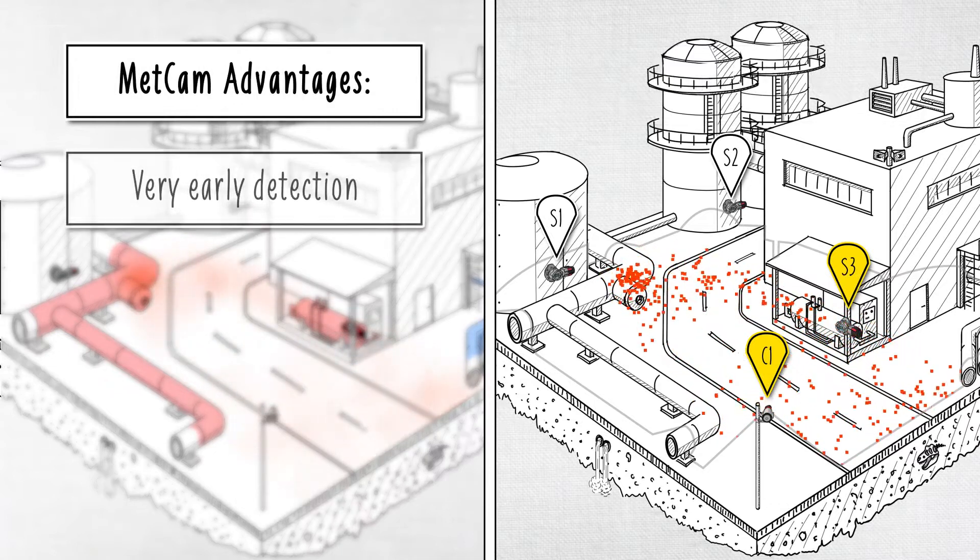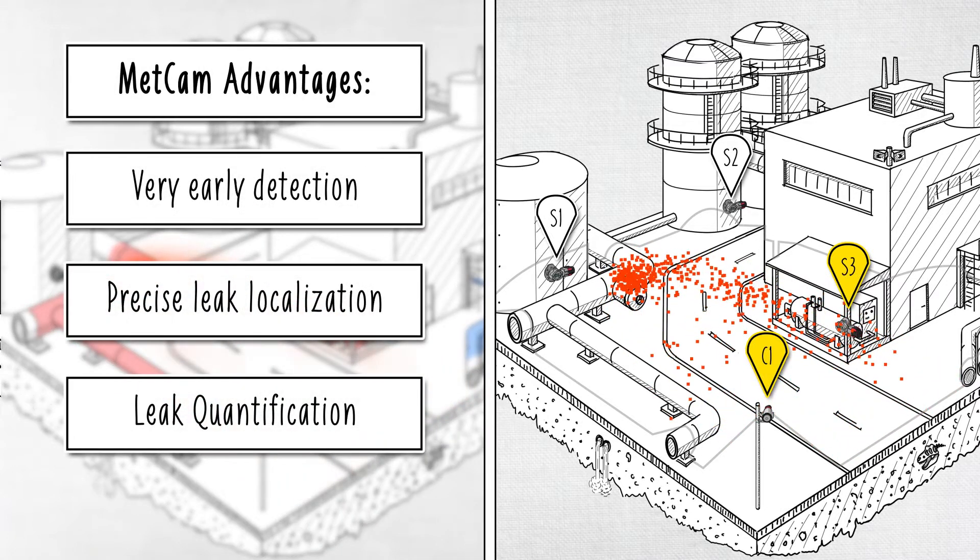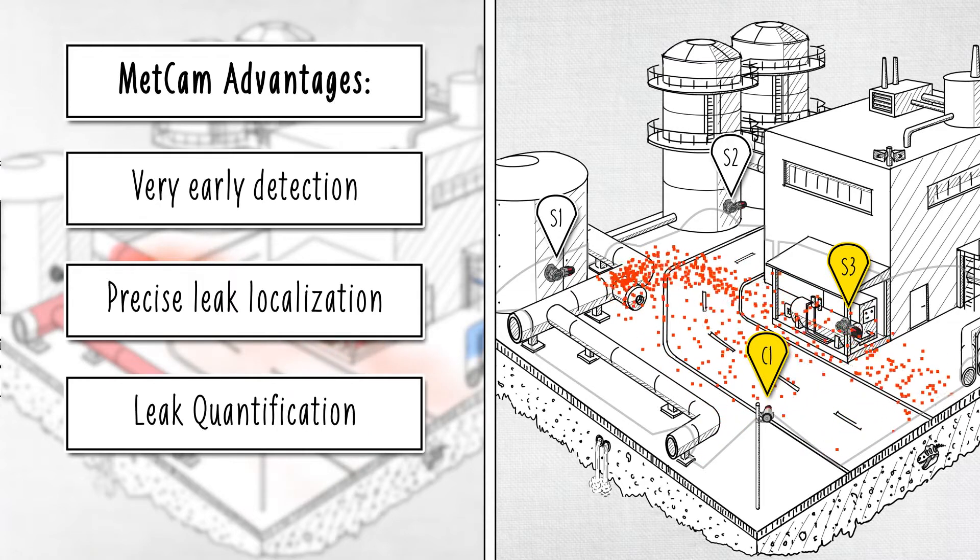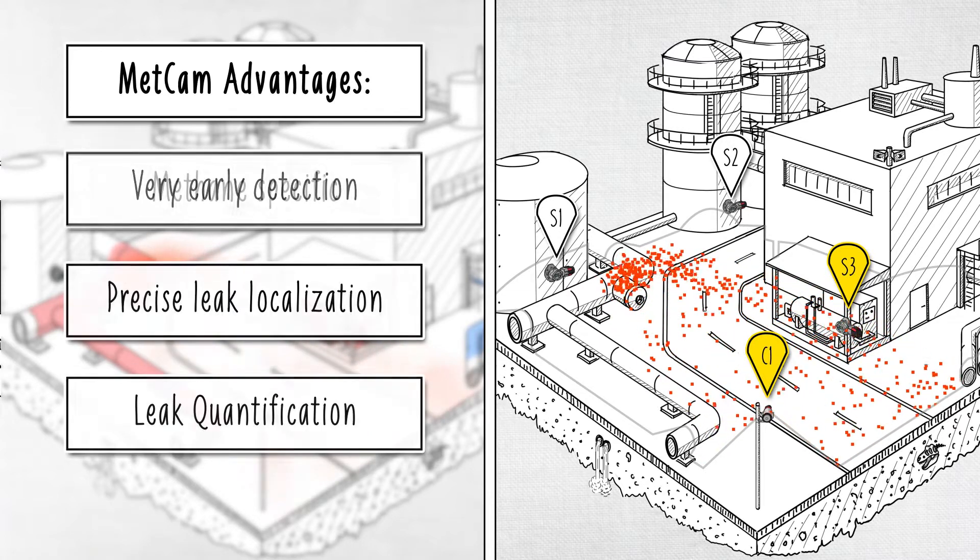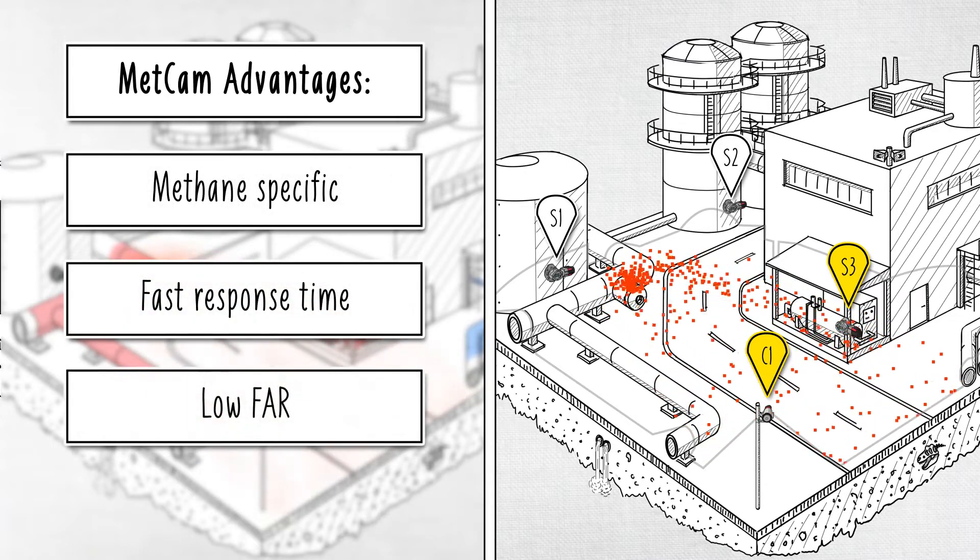METCAM automatically differentiates between small leaks and dangerous flammable ones, shows the operator where the leak originates and where it is headed, providing early detection and improving safety. It has a fast response time and very low false alarm rate.